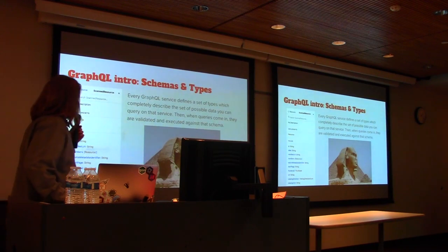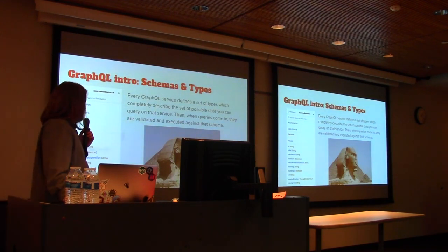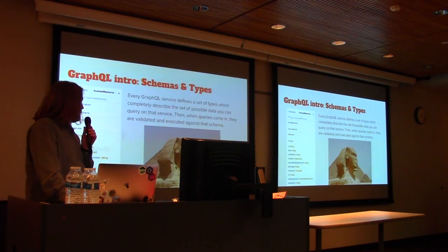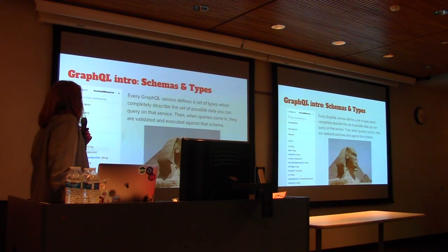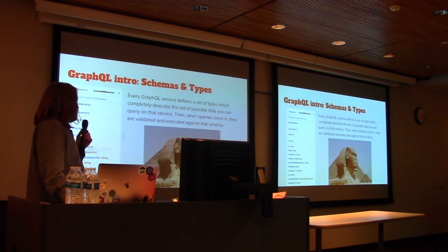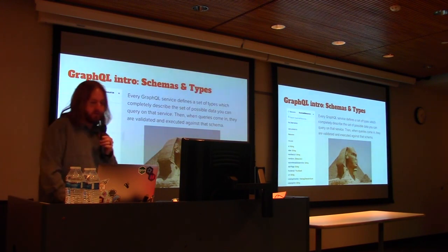Inside GraphQL, you have schemas and types. Every GraphQL service defines a set of types — that is, all the data you can query on the service. The simplest types are the types defined on the fields of an object.